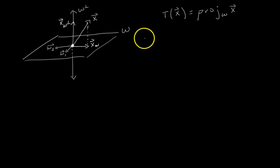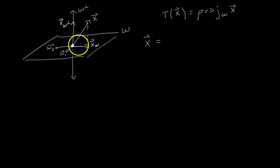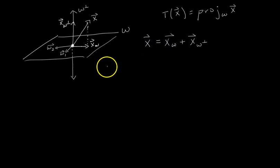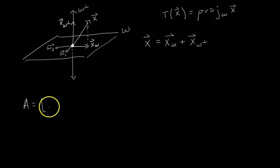The first thing we notice is that our vector X can be decomposed into two components: one component of X in W and the other component of X in W perp, and you can do this for any vector X. So we can write X as X sub W plus X sub W perp. Let's define a matrix A whose columns are the basis vectors for W — so A has columns W1 and W2.